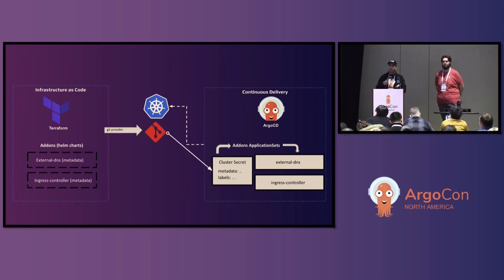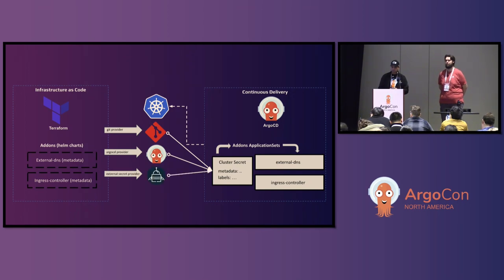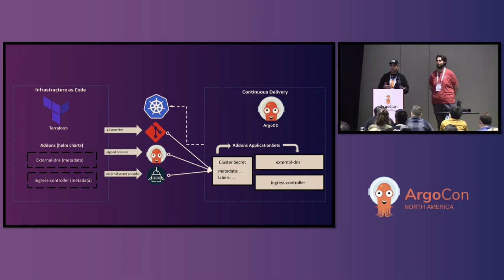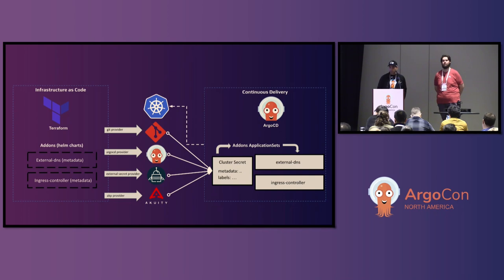There are different ways of getting that information from Terraform into that cluster secret. One is having Terraform use the GitHub provider to put files in Git. Another is using the Argo CD API to create that secret — we're going to show that example. Also, external secrets operator: when you have Hub and Spoke with 50 or 100 remote clusters that don't have Argo CD, you just need to create a secret, and external secrets operator can help there. The last pattern Nick will demo is Acuity, which can register clusters and create the labels and annotations on that cluster.